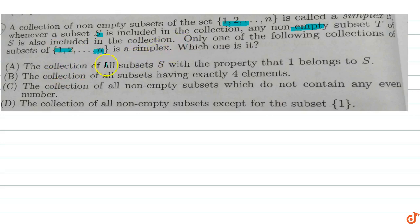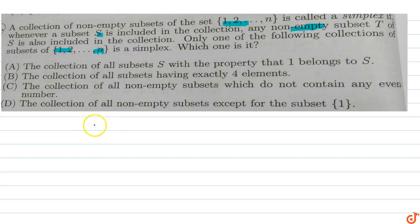The first option is the collection of all subsets S with the property that 1 belongs to S. A simplex set like {1, 2, 3, 4} means all subsets of this set are included in the collection.